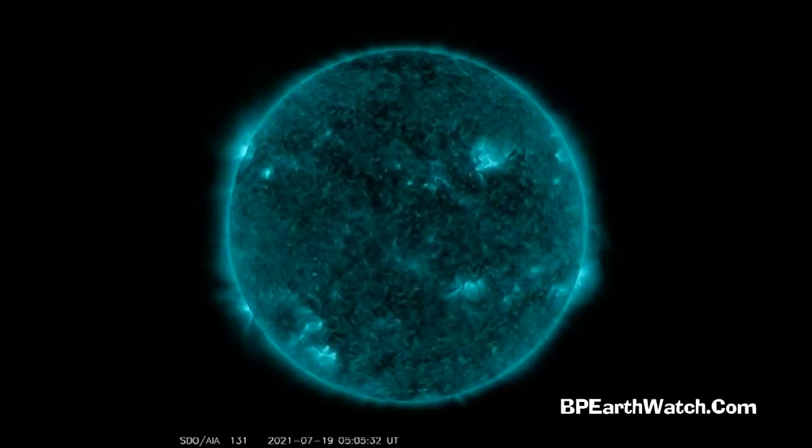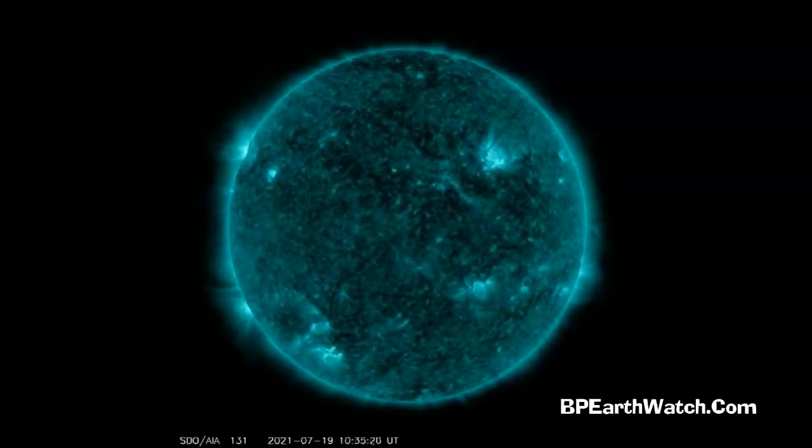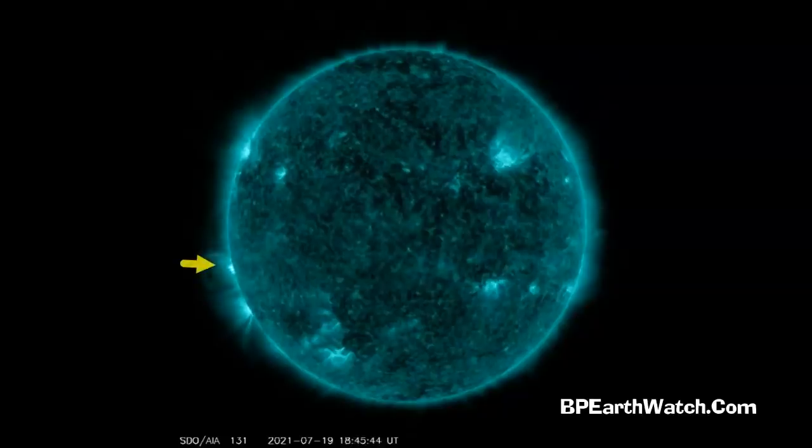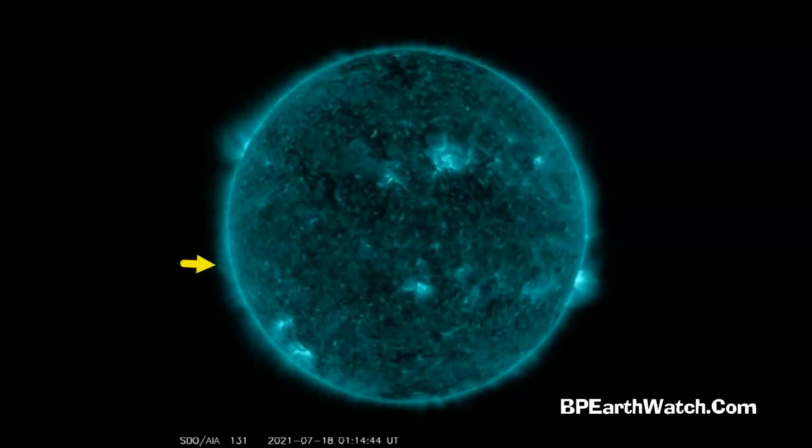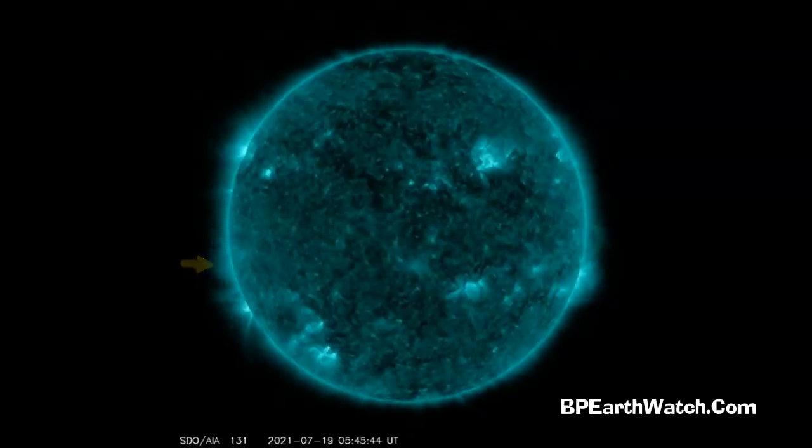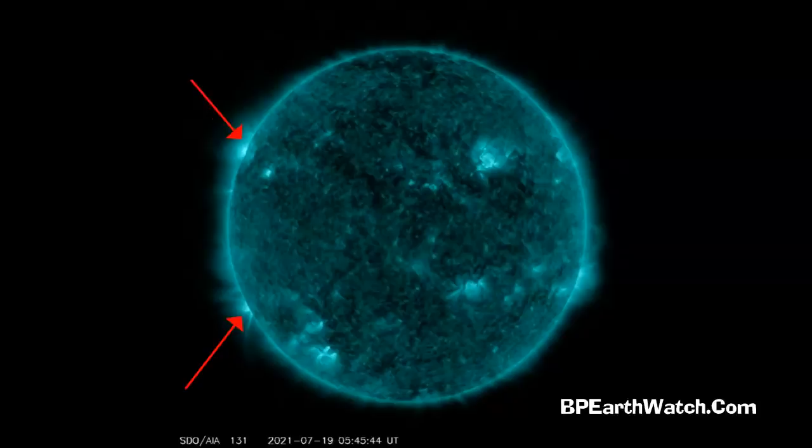Now this is going back to an earth-facing satellite called the Solar Dynamics Observatory. All of these are linked on our website at bp-earthwatch.com. So we're back to earth-facing images, and this is what's coming around this eastern limb, both the southeastern limb and the northeastern limb. Check that out.